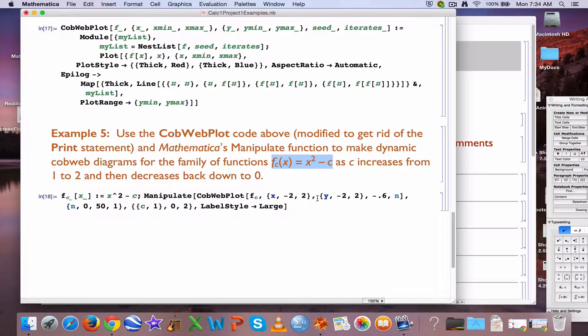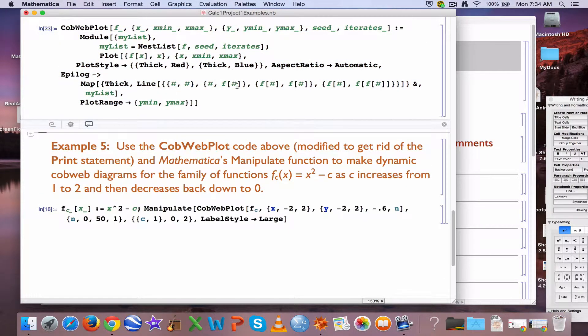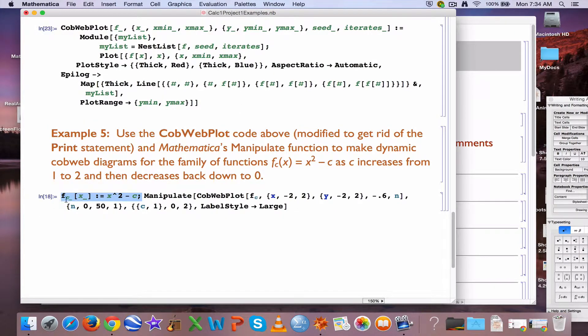You can use your calculator to iterate this for any particular value of c, you can also use Nestlist on Mathematica, or you can use this code that I created called cobwebplot. A little program in Mathematica—you don't have to worry about how it works, just understand how to use it. You plug in your function, first of all. This is a family of functions, so I put a subscript and c is treated like a variable here.